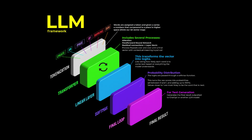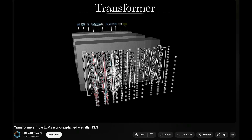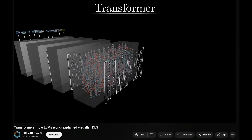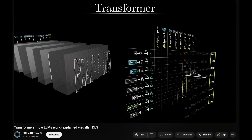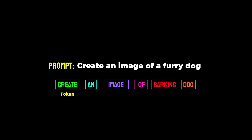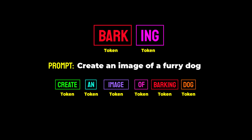LLMs have millions or even billions of neurons — mathematical units that process language in layers. Each layer refines the understanding of meaning, just like a creative review process. For example, with the prompt 'create an image of a furry dog,' it divides each word into tokens. 'Create' would be its own separate token. Occasionally it will divide a word — so 'barking' could be split into 'bark' and 'ing.' Periods count as tokens as well.